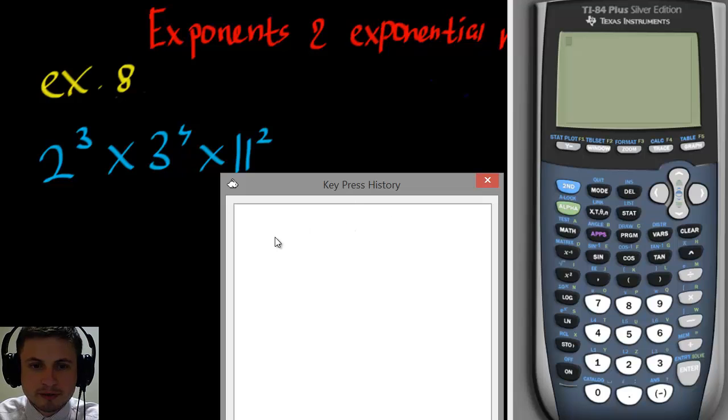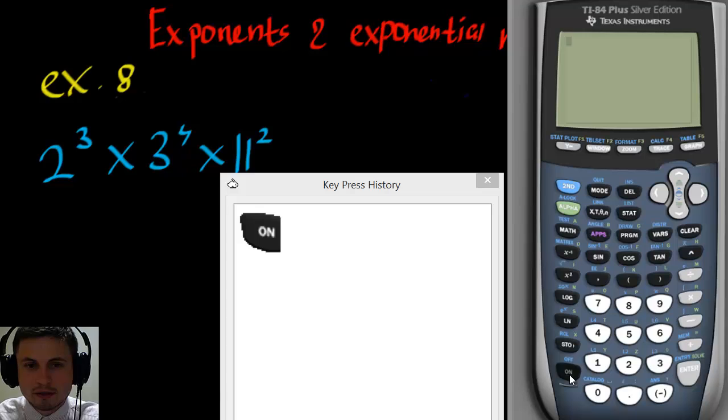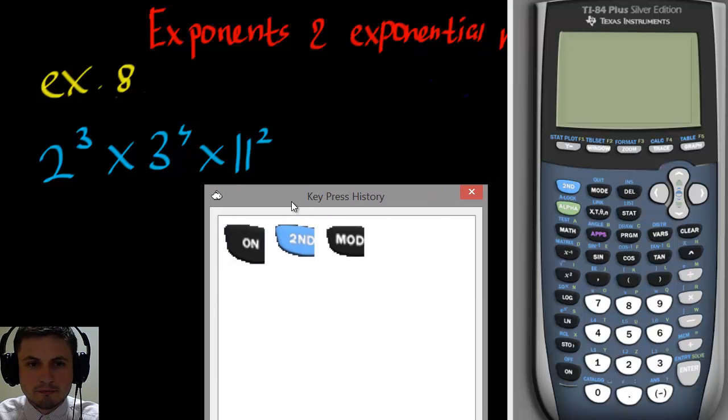You can see there's a key press history button that will show you what keys I'm pressing. Basically, turn it on, press the on button, you'll have something like this window. If you don't have this, click second, and then quit, which is actually a mode button. But in blue, it says quit here. And this will bring you to this empty window. So let's press the necessary key.